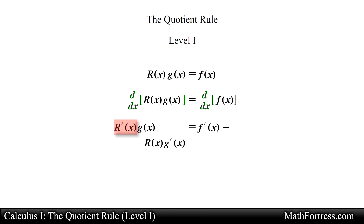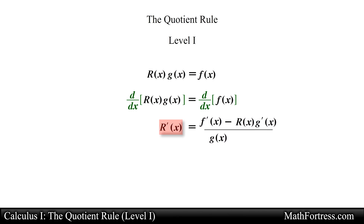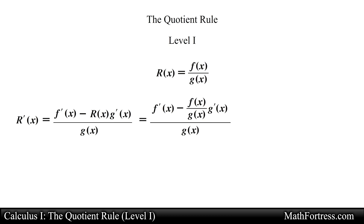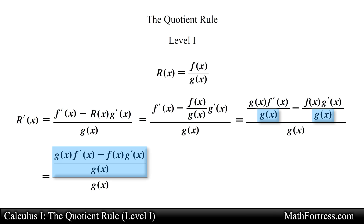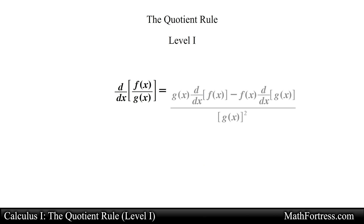So we subtract the product of r and g prime from both sides, and then we divide by g on both sides of the equation. We are almost done. Next we need to replace r with an expression in terms of f and g. Recall that r was equal to the quotient of these two functions, so we go ahead and substitute this expression. Then it is just a matter of cleaning up and rewriting as a single fraction by finding a common denominator. Then we simplify the complex fraction, resulting in the following expression for the derivative of r. This formula is known as the quotient rule.